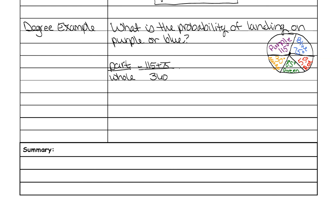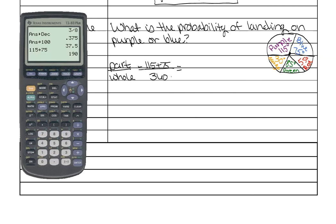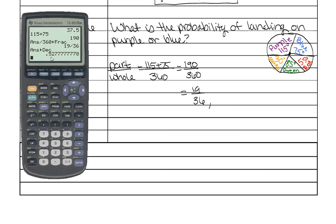Put that into a calculator and see what it gives you. The top is 190 and then over 360. Does that reduce? It does to 19 over 36. What is that as a decimal? It's point five two seven eight. What is that as a percent? And that's fifty two point seven eight.